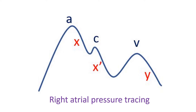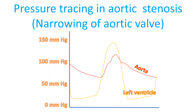Pressure is usually higher in the ventricles when the heart contracts and lower when the heart relaxes. Pressure in the ventricles is higher than that in the atria. Pressure in the left side chambers is higher than on the right side. The aorta, the major blood vessel arising from the left ventricle, has a much higher blood pressure than the pulmonary artery which arises from the right ventricle normally. These relationships can change in disease conditions.